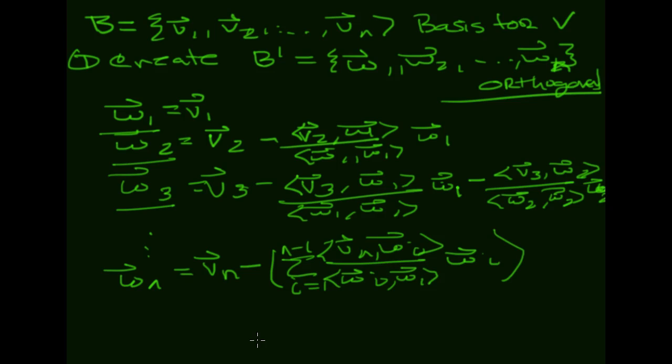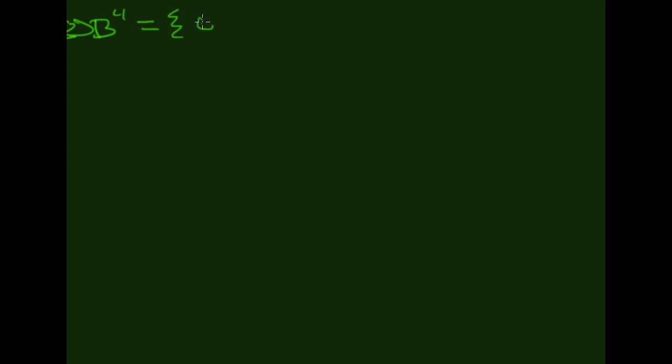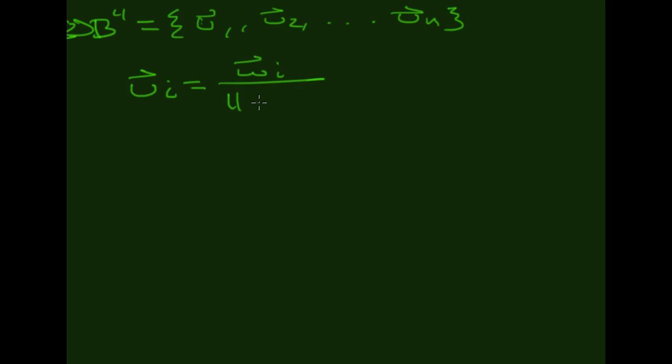What we end up with is an orthogonal basis for V — really close to what I want, but not quite orthonormal. So let's take it to the next step: step two. For orthonormal, we're going to create yet another basis, B double prime, with vectors U1, U2, out to Un. Each Ui is equal to Wi divided by its magnitude. They're still going to be orthogonal, but now they all have magnitude 1.